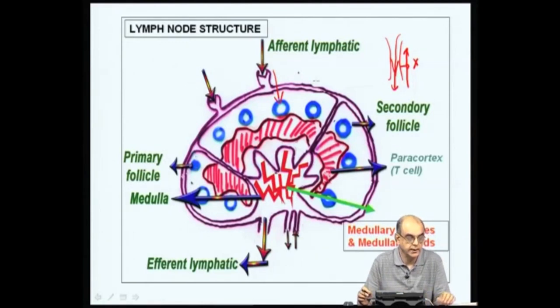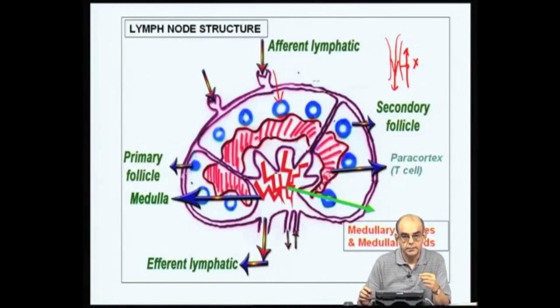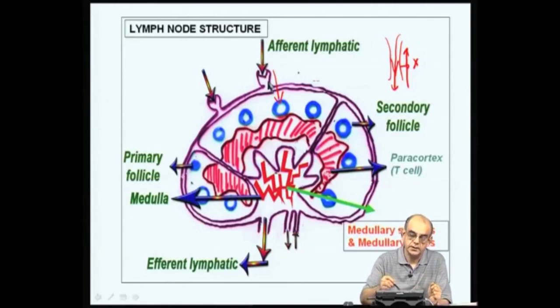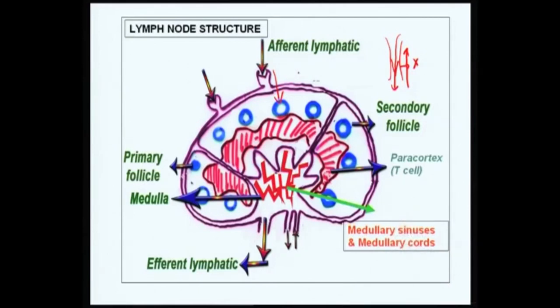These primary follicles consist of a collection of mature B cells, not only mature B cells — they also have some antigen presenting cells, follicular dendritic cells, as well as some helper T cells. So the antigen that comes in is encountered not only by the B cells but also by these follicular dendritic cells, which take up the antigen, process it, and present it to T cells, as we saw in the earlier lectures. This process results in activation of the T cells, which then secrete lymphokines such as IL-4 that help the B cells to proliferate.